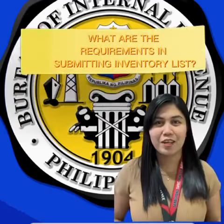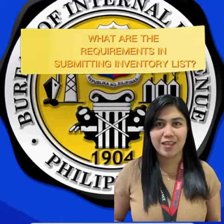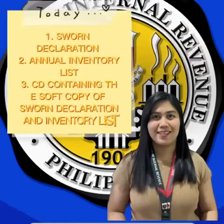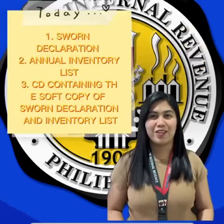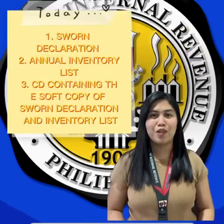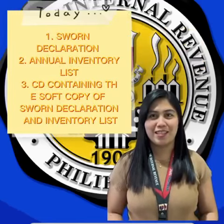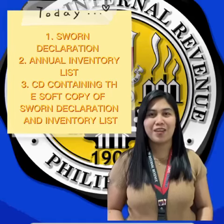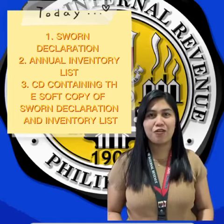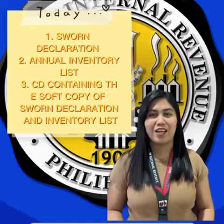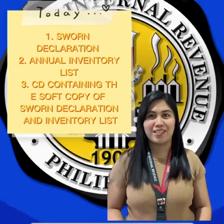What are the requirements in submitting the Inventory List? Number 1, sworn declaration. Number 2, annual inventory list. Number 3, CD containing the soft copy of the sworn declaration and inventory list.